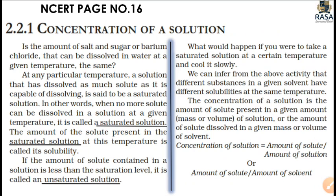Now, what about the concentration of sugar in glass 1 and glass 2 — which one is more? The concentration of sugar in glass 2 will be more, because we mixed two spoons of sugar in glass 2 and only one spoon of sugar in glass 1. We are able to know this because we know how much we mixed in each glass. Now we have to calculate it in terms of mass or volume.